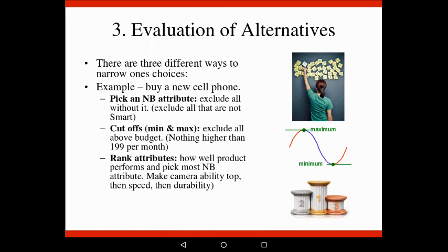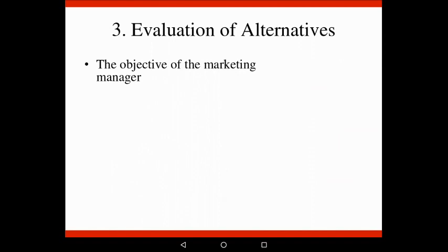Lastly, we have something called rank attributes. You look at different categories or criteria and rank them. For example, camera must be at the top - you want a phone with the best camera, so that gets number one. Then you look for good speed, and lastly it must be durable. You'll rank all the different phones - one might score three for camera, one for durability, five for speed - then compare the others until you find the one that most resembles what you want.